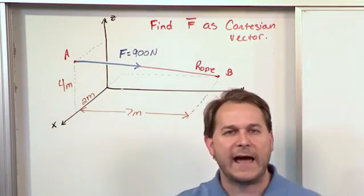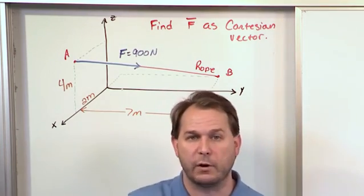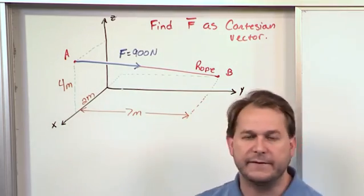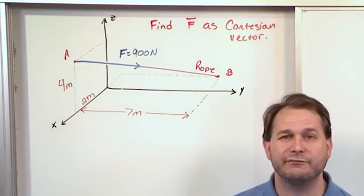What this really means is if I had a wall over there and I tied a rope to it, and then I bring the other end of the rope in my hand, that rope is going to define a direction, A and B. And then I pull on the rope with a force, in this case 900 Newtons.